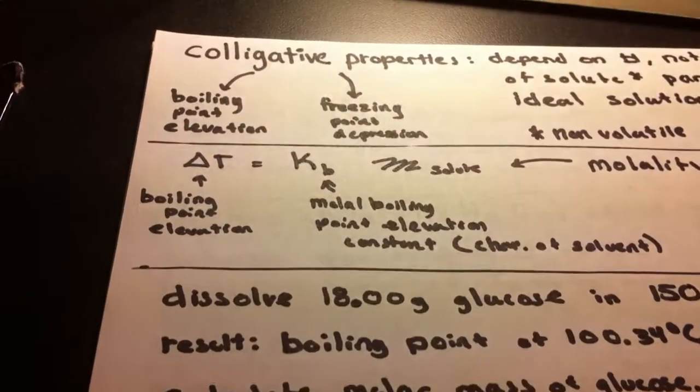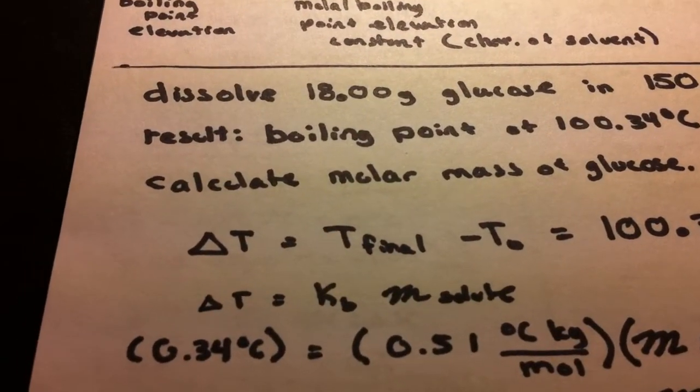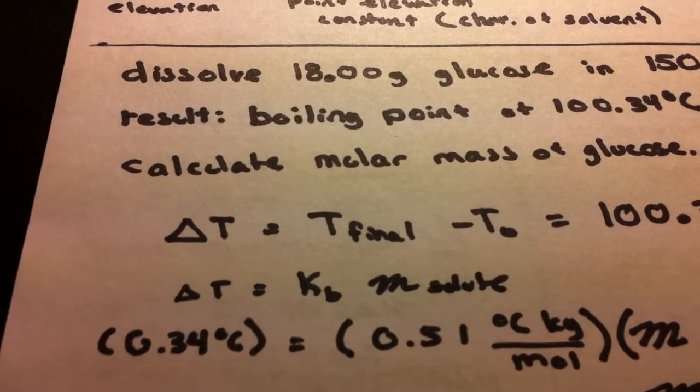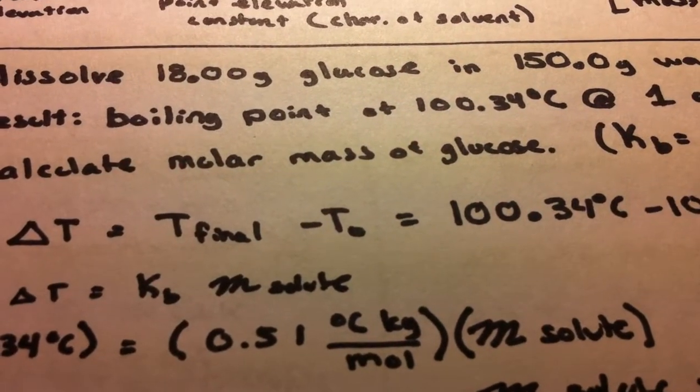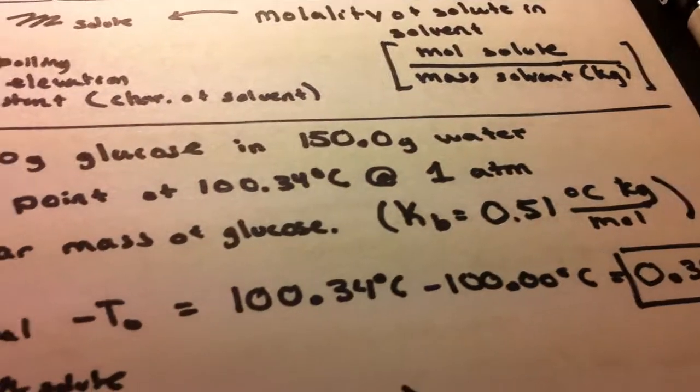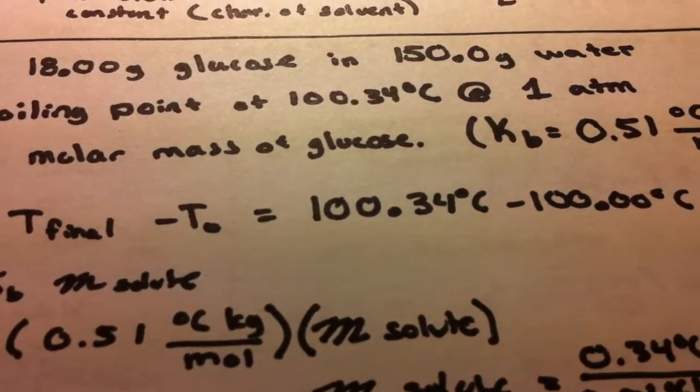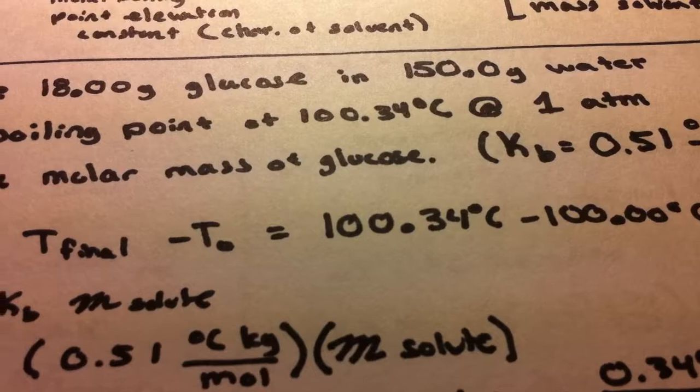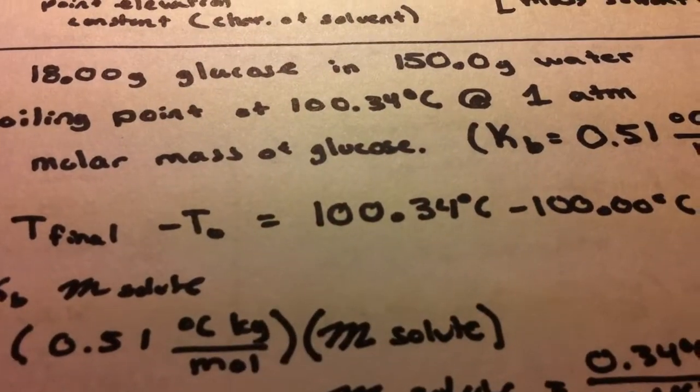So we take our equation, plug and chug. We just calculated 0.34 degrees Celsius. We were given the KB value, and we're trying to find M solute in this case. And that's going to help us find the molar mass of glucose.